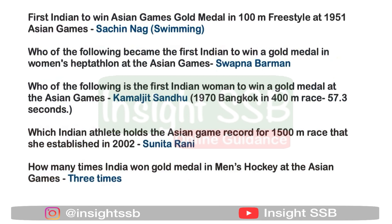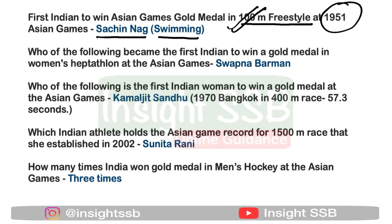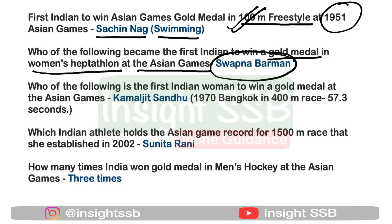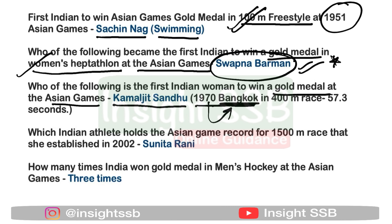The first Indian to win a gold medal at the Asian Games was Sachin Nag, who won gold in the 100-meter freestyle swimming event at the 1951 Asian Games. The first Indian woman to win a gold medal at the Asian Games was Kamaljeet Sandhu in 1970 at the Bangkok Asian Games, where she set a record of 57.3 seconds in the 400-meter race.